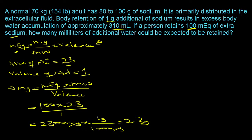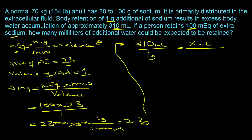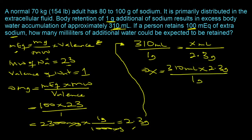Using the given correlation — 310 ml of water per 1 gram of extra sodium — we set up the proportion: x = 310 ml × 2.3 g / 1 g = 713 milliliters of additional water retained.